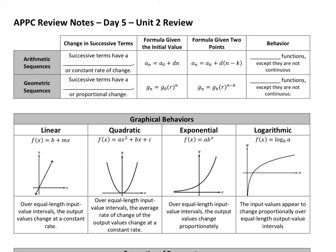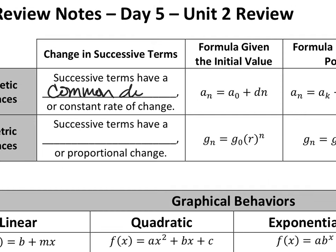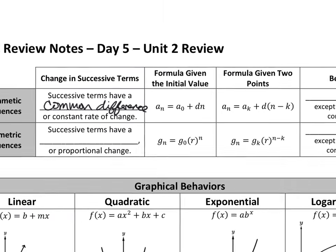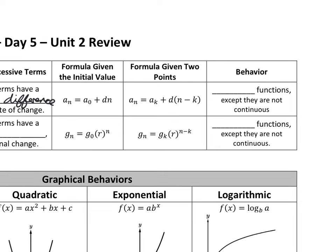We learned about two types of sequences in this class: arithmetic sequences and geometric sequences. For arithmetic sequences, successive terms have a common difference — meaning they change by the same number each time. Here are the formulas to memorize. Whether you're given the initial value a-sub-0, or some point k and a-sub-k, you can find these. They look like linear functions, and that's exactly how they behave, except they're not continuous — they'll just be dots. You could think of this as y equals b plus m times x, where m is your slope and d is your common difference. Arithmetic sequences — you can treat them like linear functions, just don't connect the dots.